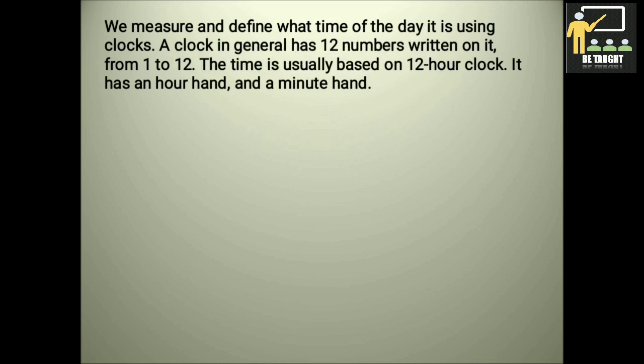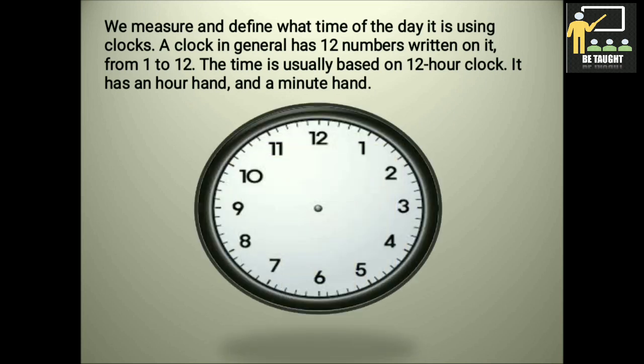We measure and define what time of the day it is using clocks. A clock, in general, has 12 numbers written on it, from 1 to 12, like 1, 2, 3, 4, 5, 6, 7, 8, 9, 10, 11, 12. The time is usually based on 12 hour clock. It has an hour hand and a minute hand. So the hour hand is the short hand, and the minute hand is the long hand as you can see in the picture.